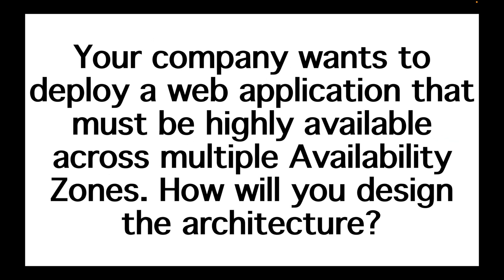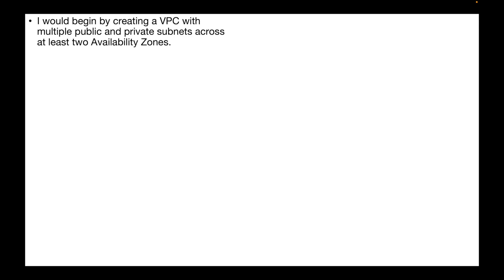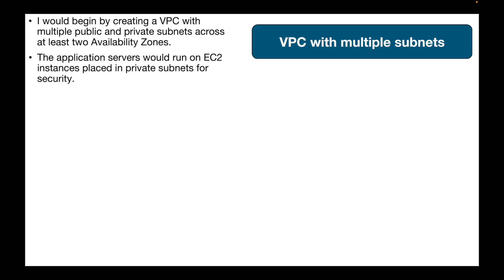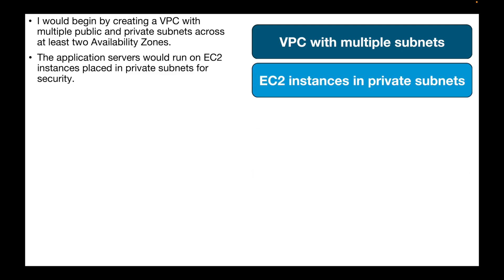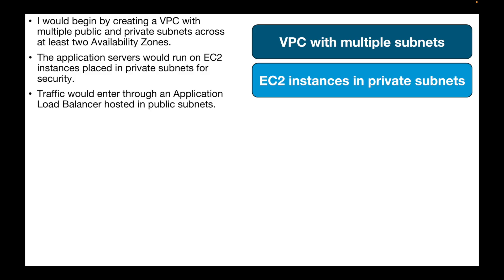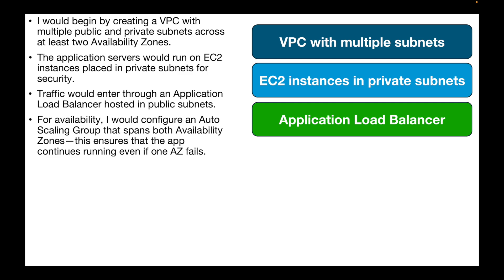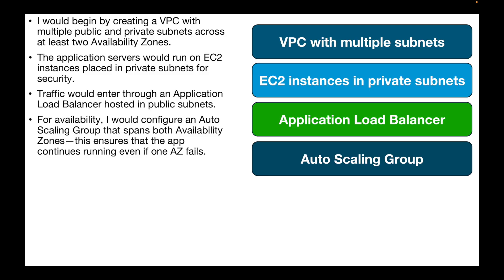The first question is: your company wants to deploy a web application that must be highly available across multiple availability zones. How will you design the architecture? We can begin by creating a VPC with multiple public and private subnets across at least two availability zones — like two public subnets and two private subnets. The application servers would run on EC2 instances in the private subnets for security. Traffic would enter through an Application Load Balancer hosted in the public subnets, and we can configure an Auto Scaling Group spanning both availability zones to ensure the application continues running even if one zone fails.